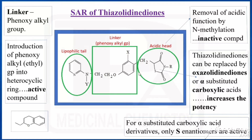What are the three parts present here? The head should be acidic, so that is why it is called acidic head, and the tail should be lipophilic — that is why it is called a lipophilic tail. The linker present here is a phenoxyalkyl group. So the three parts are: acidic head, lipophilic tail, and phenoxyalkyl linker.